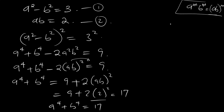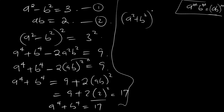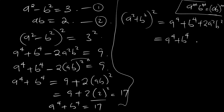Now let's also find the square of a squared plus b squared. If you square this, you get a raised to power 4 plus b raised to power 4 plus 2a squared b squared, which is the same as a raised to power 4 plus b raised to power 4 plus 2 times ab, all squared.